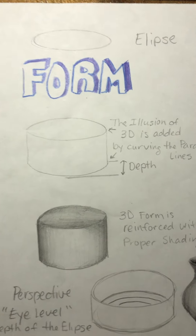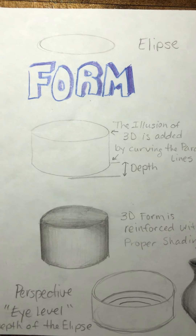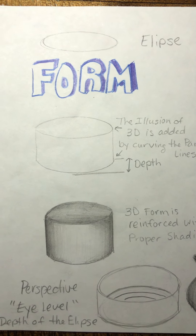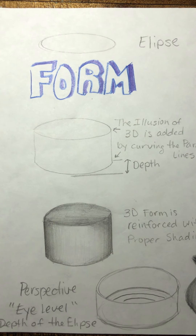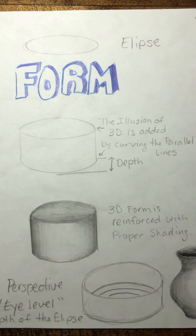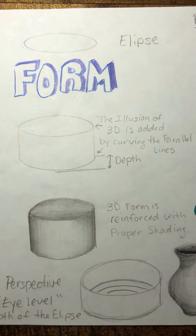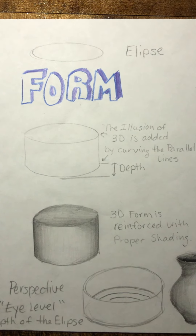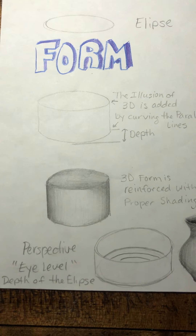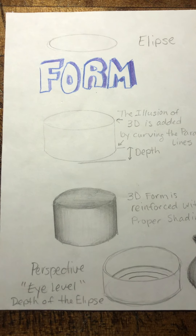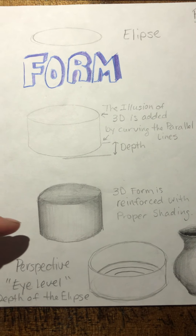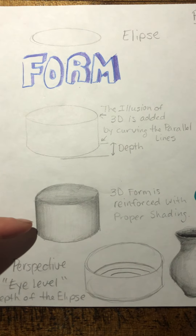Most of the time, you're going to be showing bird's eye view because objects are sitting down on a table and you're looking down at them. With shading, which is what we're going to learn in this video, you're reinforcing how the light hits an object.